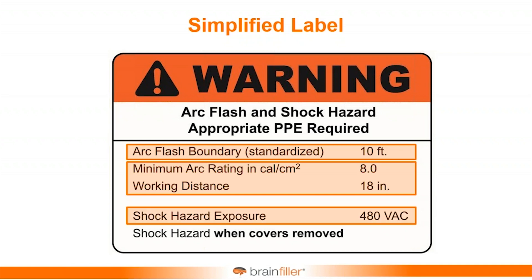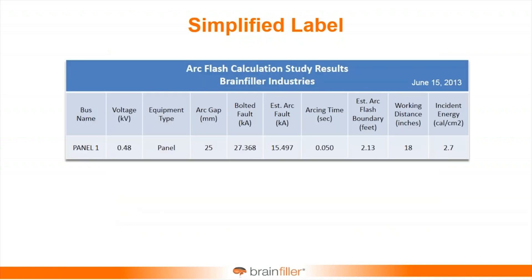It makes it so much simpler. You want to add the working distance — I can't emphasize that enough. That's not required in 70E, but in my view you need to know what distance that arc rating is associated with. And then of course the shock hazard. What makes this simpler is when you perform an arc flash study, you'll have a certain incident energy based at a certain working distance and an arc flash boundary. Someday you may go back and rerun the analysis, and when that happens, numbers can change — short circuit currents may go up or down, clearing times may go up or down, and the incident energy and arc flash boundary may go up or down.